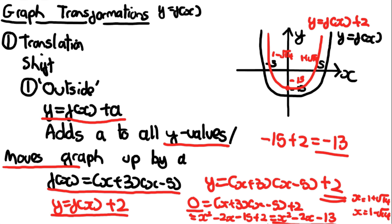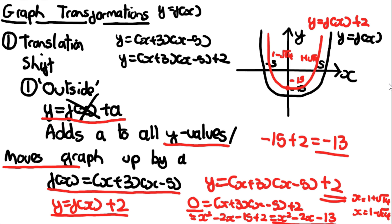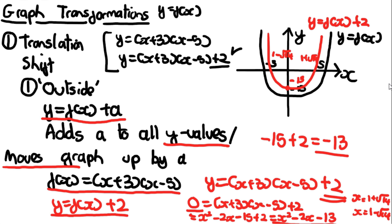It's very useful to identify what a new graph will look like. Sometimes a question might say sketch y = (x+3)(x−5), then ask you to sketch y = (x+3)(x−5) + 2 without using f(x) notation. You need to compare the two graphs and identify the transformation. The only difference is the plus 2 on the end, so it's an outside-the-function translation of +2. You sketch the first graph, then shift it up by 2.